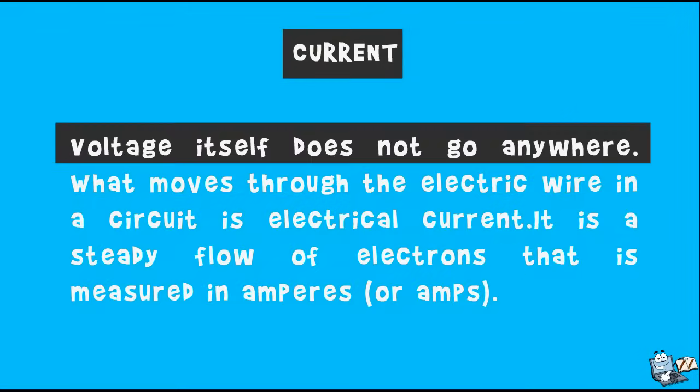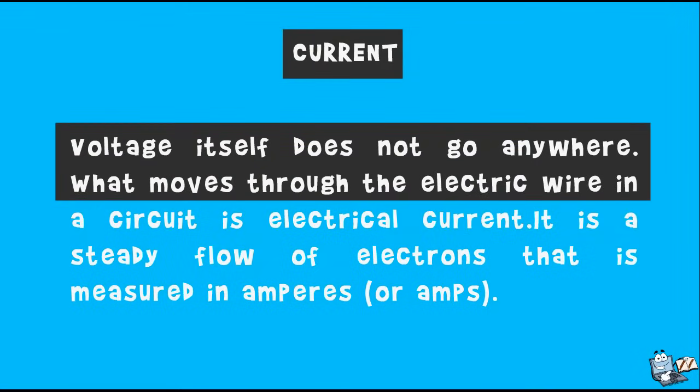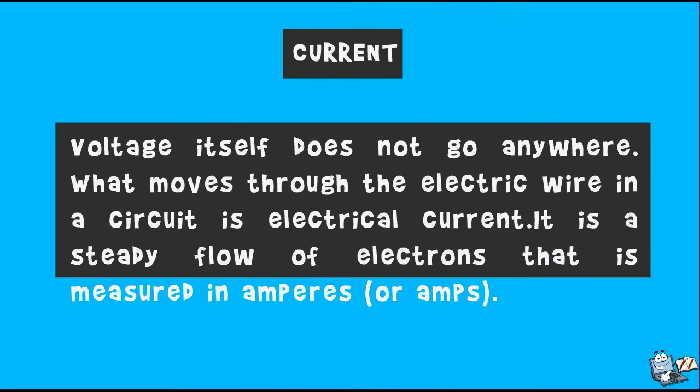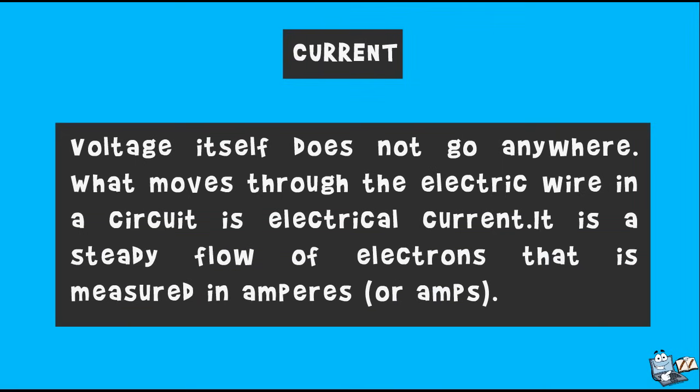Current: voltage itself does not go anywhere. What moves through the electrical wire in a circuit is an electrical current. It is a steady flow of electrons that is measured in amperes, or amps.